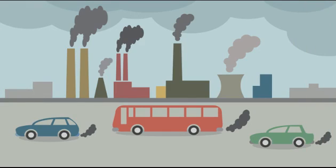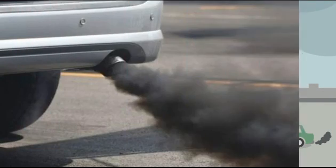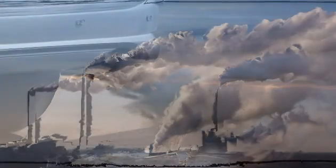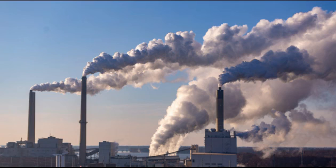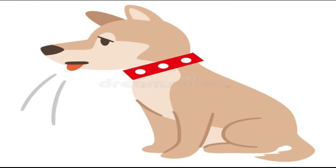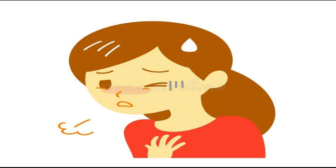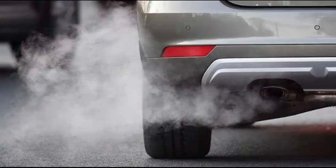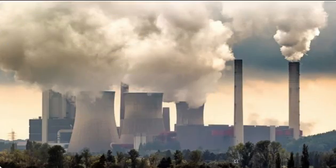Air pollution is one of the most widespread forms of pollution. It happens when harmful gases or smoke enter into the air, making it difficult for plants, animals and humans to breathe or survive. Two important causes of air pollution are the burning of fossil fuels like petrol and diesel, and the release of poisonous gases by factories.